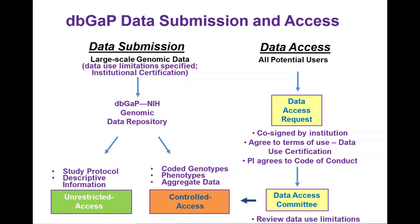There are two tiers to DbGAP: the unrestricted access part and the controlled access part. The unrestricted access is where we have our study protocols and other descriptive information. Controlled access is where we have the individual-level genotype and phenotype data, as well as the summary statistics — because of Homer, which was mentioned.